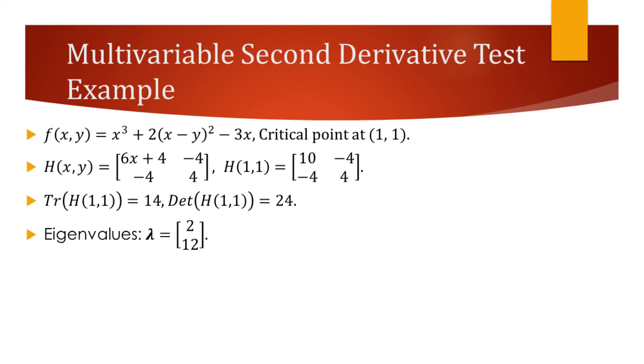Since the eigenvalues of this Hessian are all positive, it is a positive definite matrix. Which means that the critical point is a local minimum.